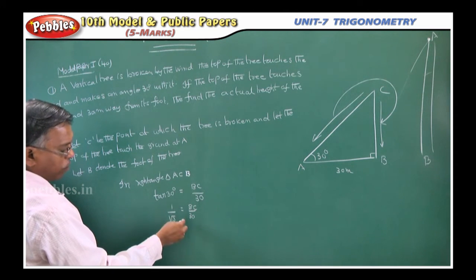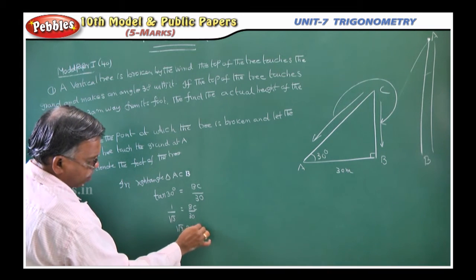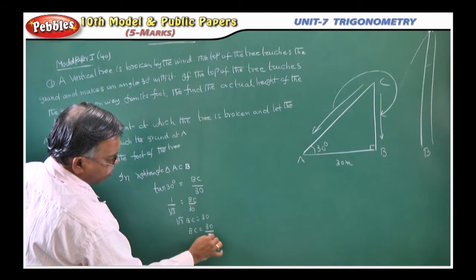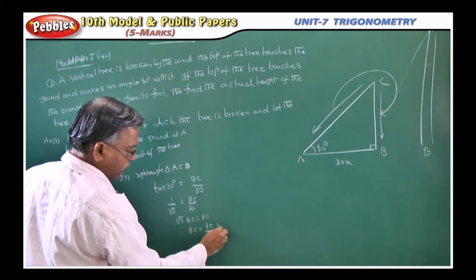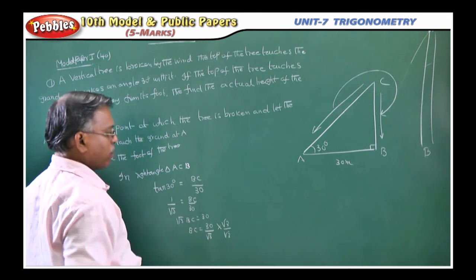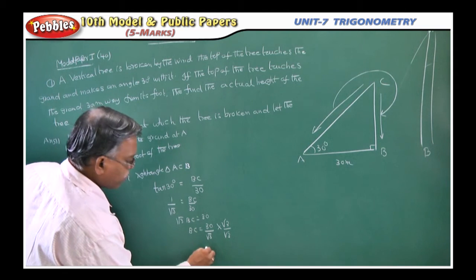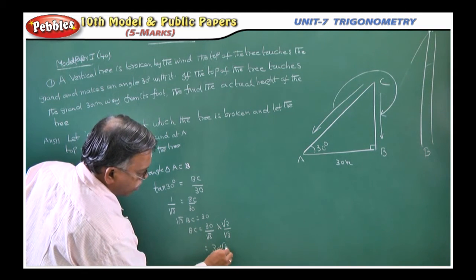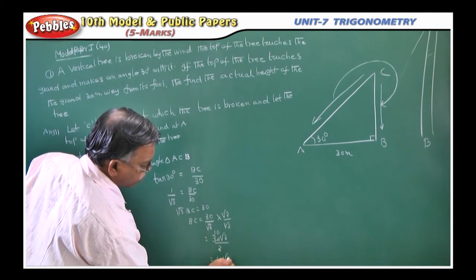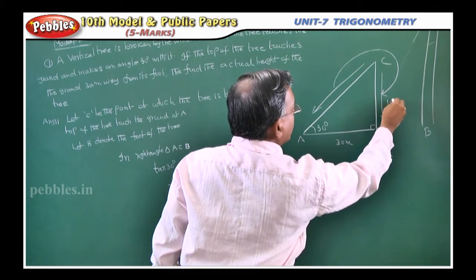Cross multiply: root 3 into BC is equal to 30. What is BC? 30 by root 3. Or you can rationalize like this: root 3, root 3 you multiply both numerator and denominator. That numerator becomes 30 root 3, denominator becomes 3. So 10 root 3. This part is 10 root 3 you got.